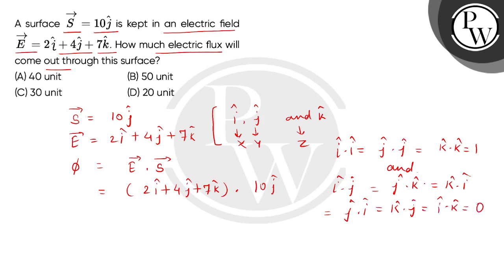From this we can observe that 4 multiplied by 10 gives the answer. So the flux is 40 units. Hence the correct option is option A.